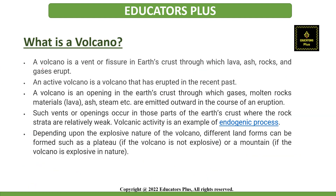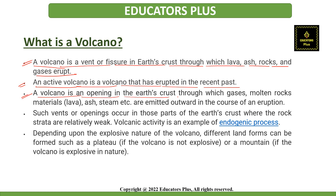Now let's start with the topic that is volcanic eruptions. What is a volcano? The volcano is a kind of vent or we can say a fissure in Earth's crust, through which lava, ash, rocks and gases erupt. The active volcano is one that has erupted in the recent past. Basically, the volcano is an opening in the Earth's crust through which gases, molten rocks, and materials such as lava, ash, and steam are emitted outward in the course of an eruption. These vents or openings basically occur in those parts of the Earth's crust where the rock strata is relatively weak.